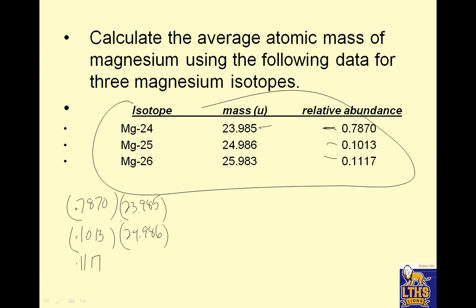Now in this case, notice I did one and two. This one has three isotopes. So you just have a third one to do. Don't worry. You have a calculator. It's your friend. So 0.787 times 23.985 is 18.876. 0.1013 times 24.986 is 2.5311. 0.1117 times 25.983 equals 2.902. I'm going to add all those together and I get 24.309 AMU.